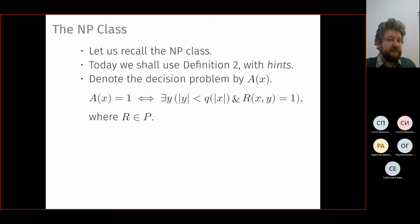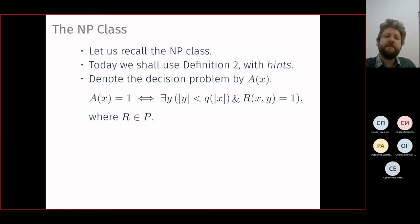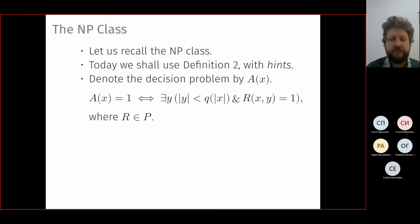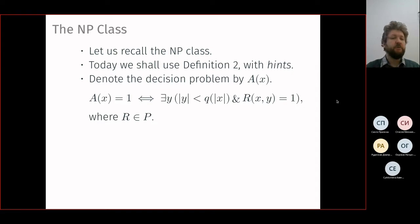We say the answer is yes if there exists a y — called a hint or witness — of polynomial size, where q is a polynomial of the input size. We then compute some polynomial-time decidable predicate. The existential quantifier corresponds to what we call angelic choice: the force giving us the hint wishes us to win and answer yes.